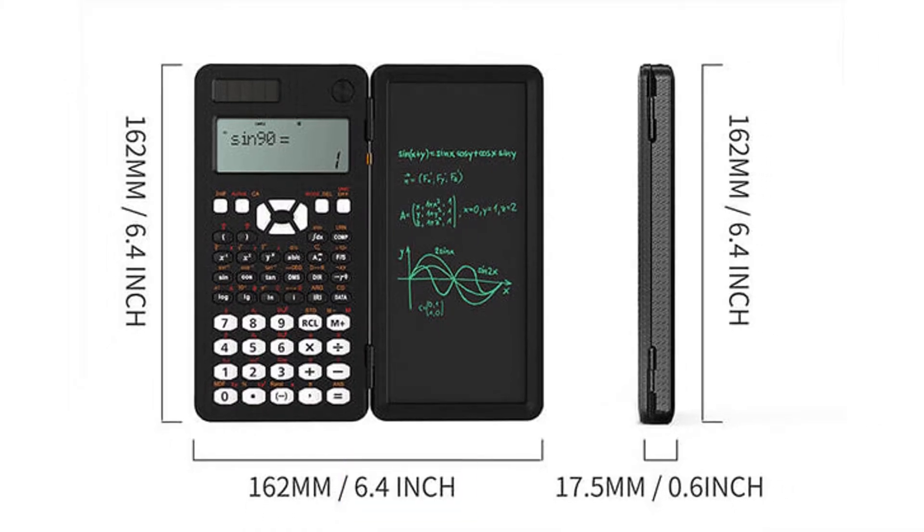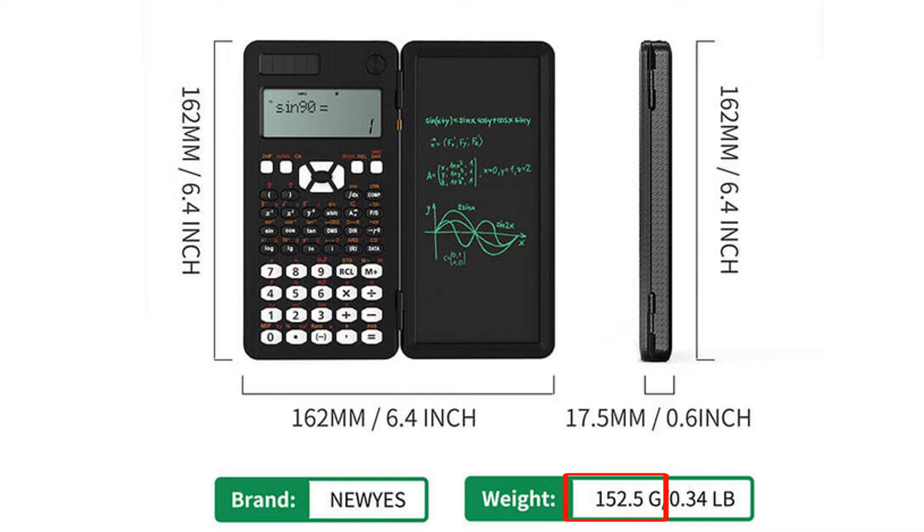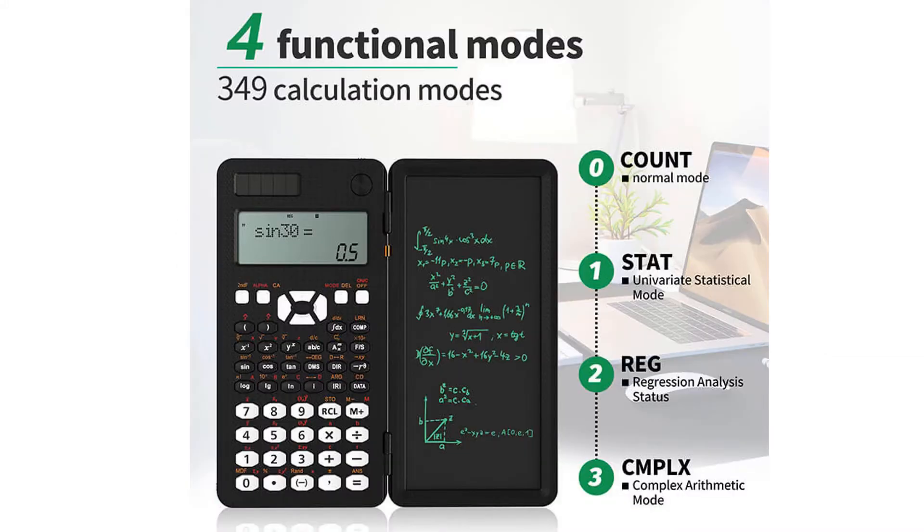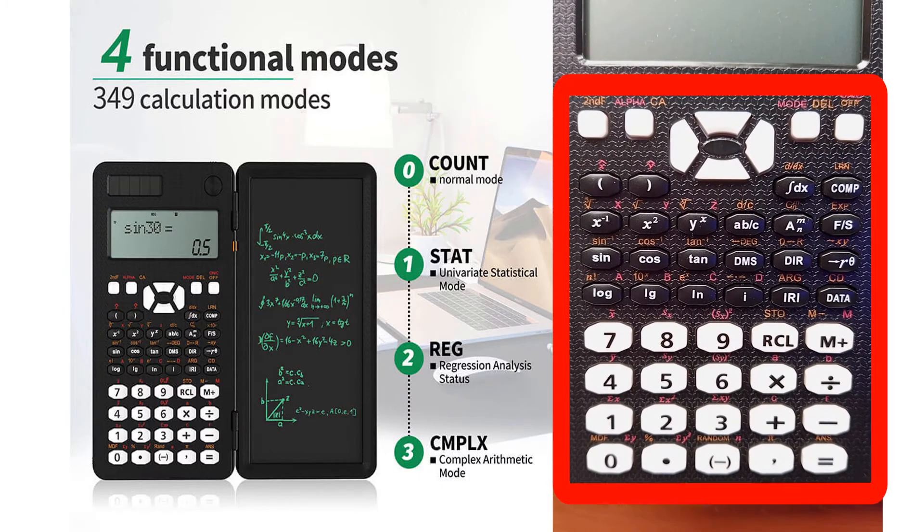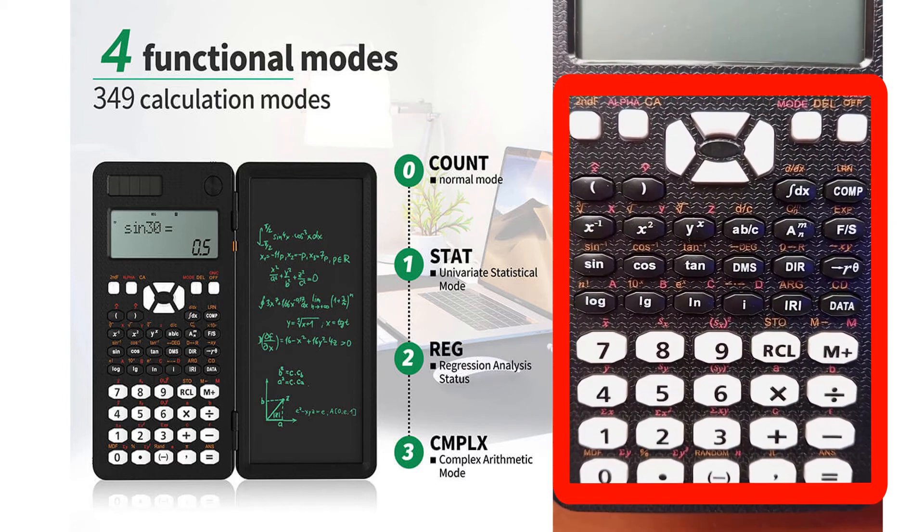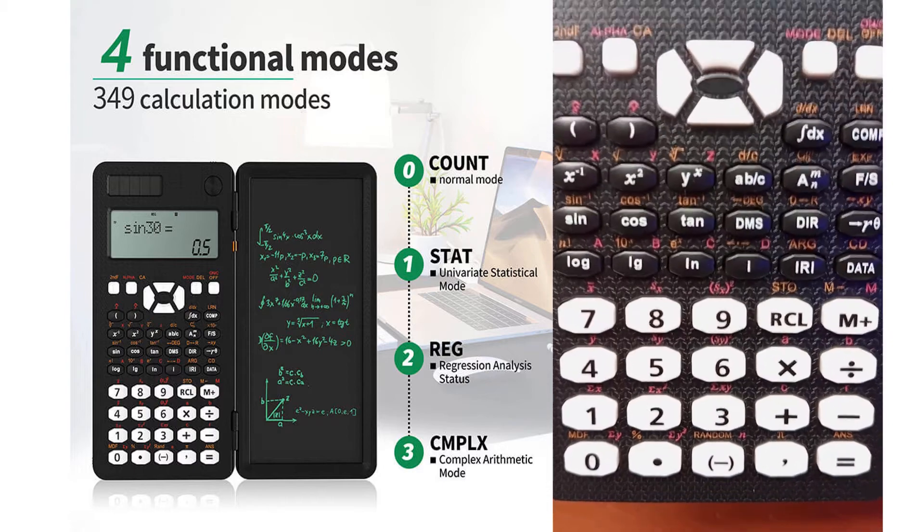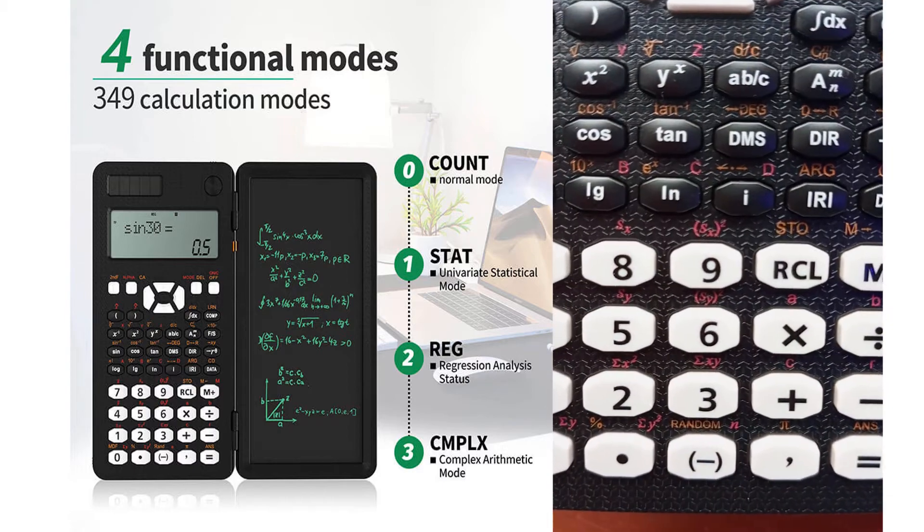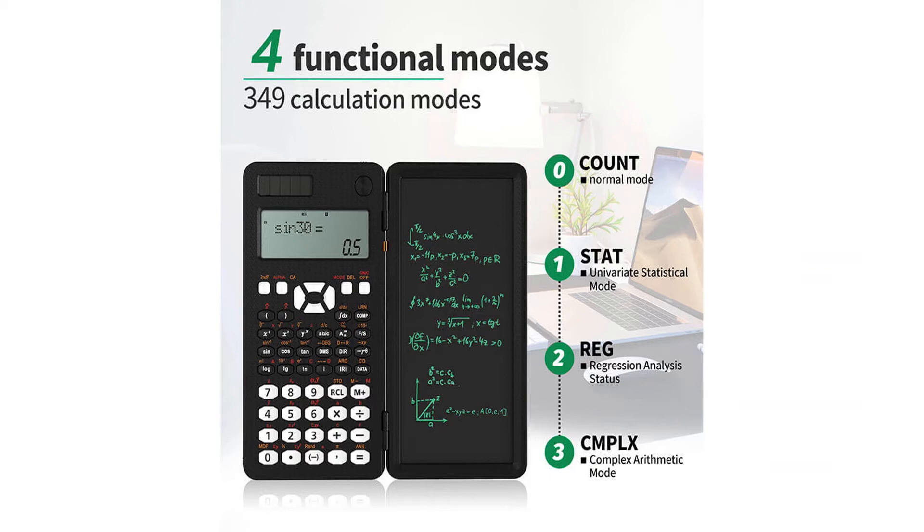Now it is made up of four functional modes: the normal mode, statistical mode, regression mode, and complex mode. Apart from these four functional modes, it is also made up of 349 computing functions, which is absolutely insane guys. These functions include complex numbers, linear regression, computer science, statistics, conversions, trigonometric functions, and many more. Now let's go ahead and talk about the features of this calculator.